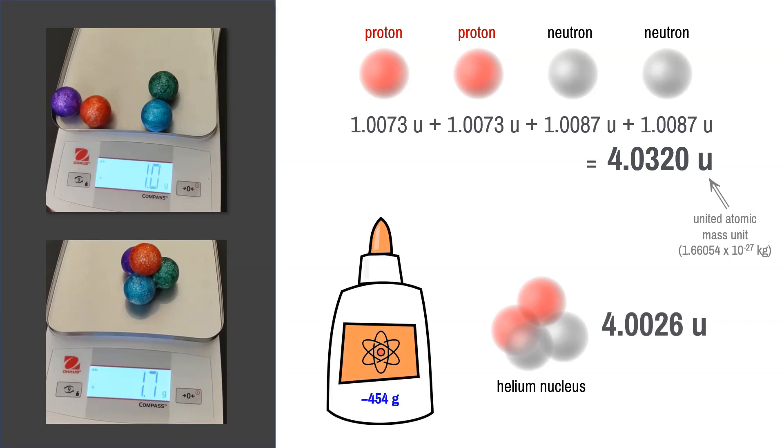It's as if the nuclear glue that holds the protons and the neutrons together has negative mass. Is that possible?